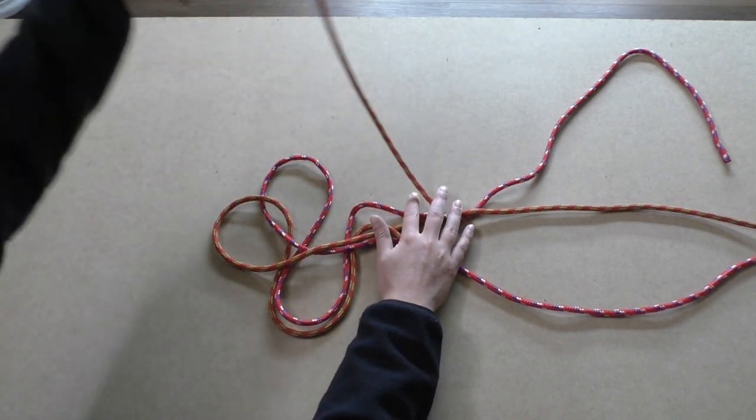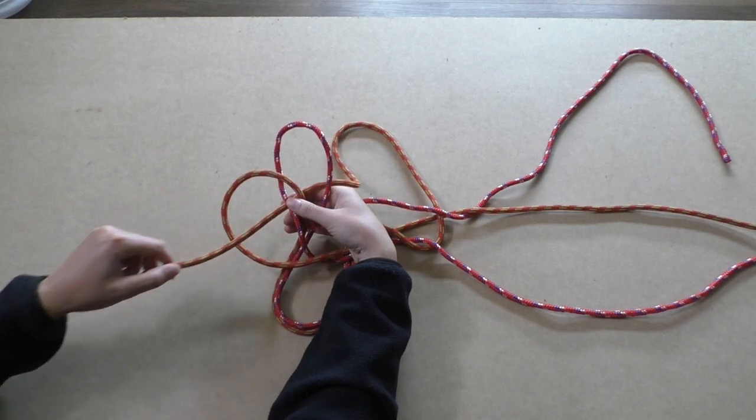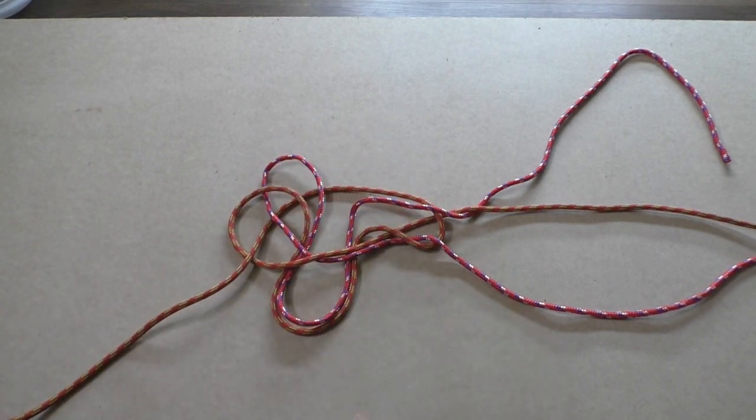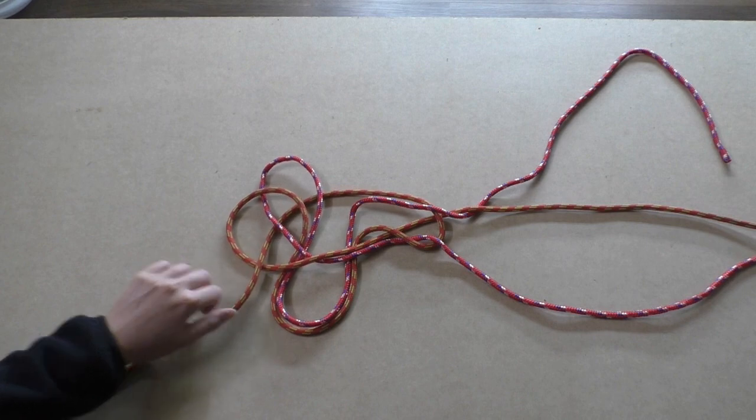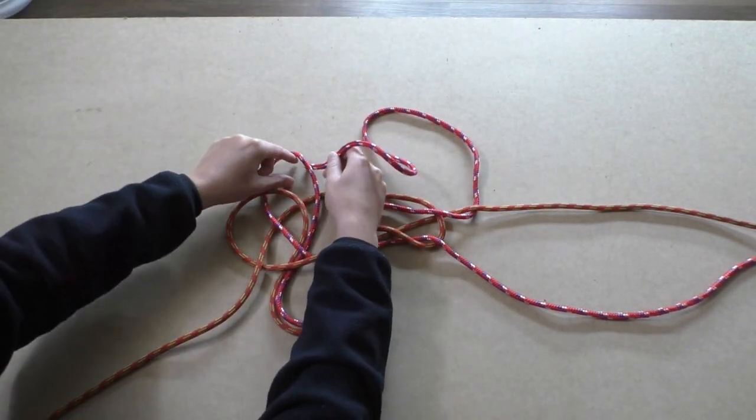Take the upper end and bring it underneath the first three ropes of the left loops and over the last orange rope. Take the red upper end and feed it just underneath the first red rope of the left loops.